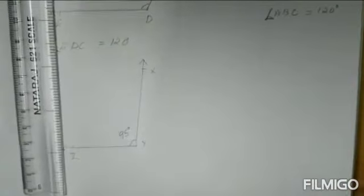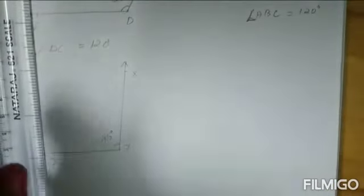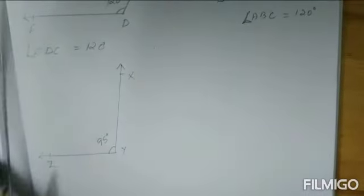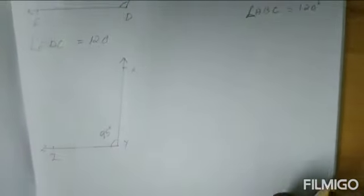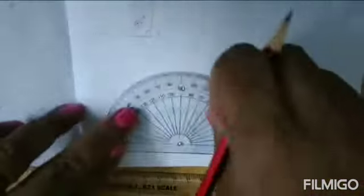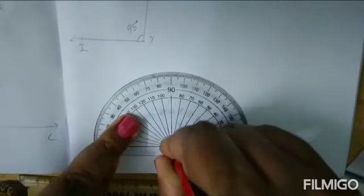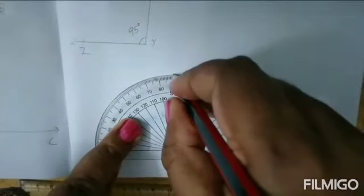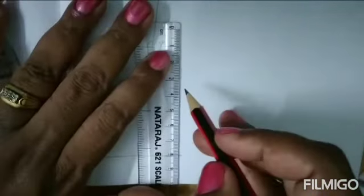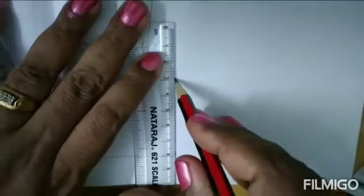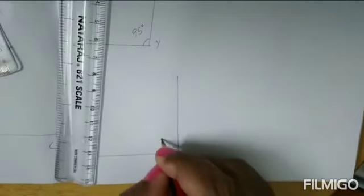Drawing 95 degrees in the other orientation with the vertex on the left-hand side is the same thing. Now let's see how to draw 90 degrees using the protractor. Last year we learnt how to draw 90 degrees using the set square — the square edge of the set square is 90 degrees. For drawing 90 degrees with a protractor, draw the baseline, place the protractor, mark the vertex, and take 90 degrees straight from the vertex. Join the vertex to the 90-degree point.